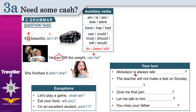Practice: 'Abdulaziz is always late' — find the auxiliary verb: 'is', which is affirmative, so make it negative: 'isn't he?' Easy. 'The teacher will not make a test on Sunday' — the auxiliary verb is 'will not', which is negative, so make it affirmative: 'will he?' — 'The teacher will not make a test on Sunday, will he?'